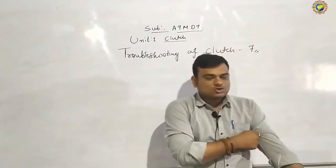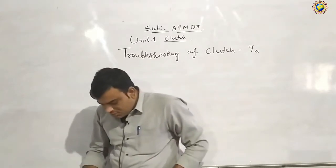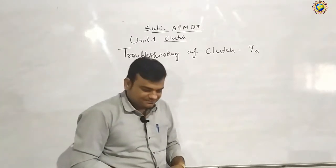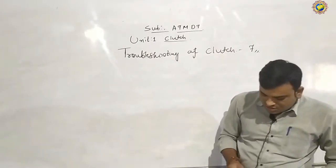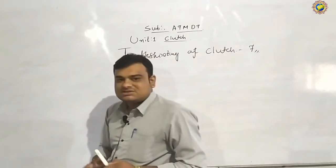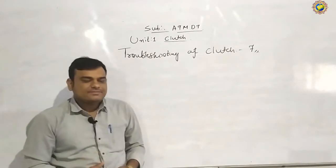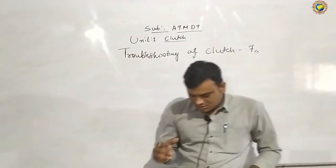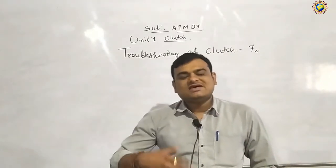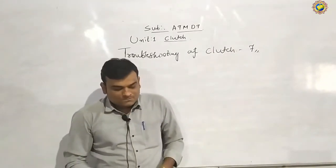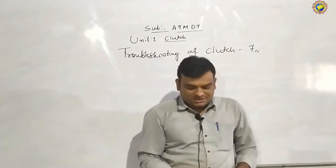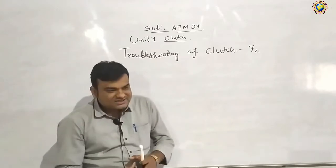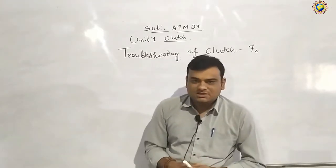First of all, we discussed about the troubleshooting of the clutch — which trouble is created on the clutch. The troubles are: clutch slips, clutch grab, clutch noisy during engage position, clutch noisy during disengage position, clutch pulsation, and wear and tear of friction plate. These are the 8 troubles.